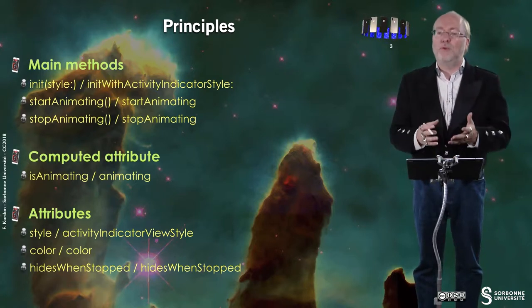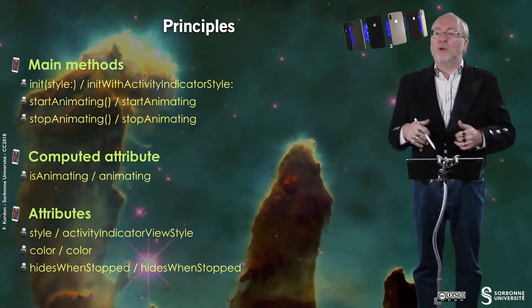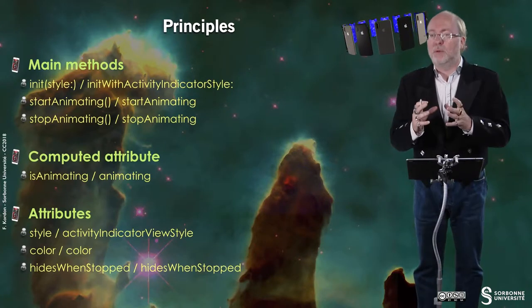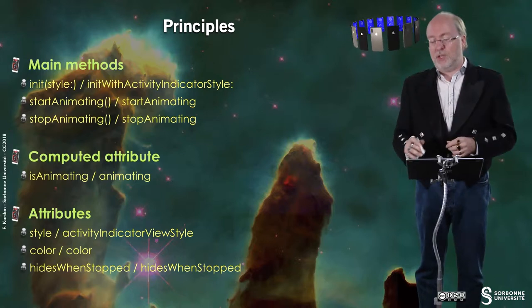You set the color after initialization, otherwise it will be reset. And you have the attribute hidesWhenStopped, which is true by default. When you stop the animation, the view is automatically hidden. But if you set it to false, when you stop it, it's still visible. You may need that in some situations.